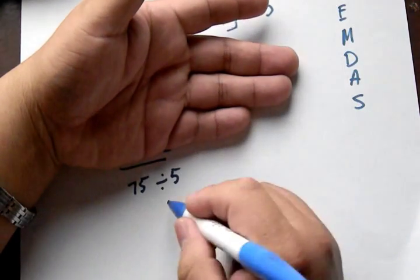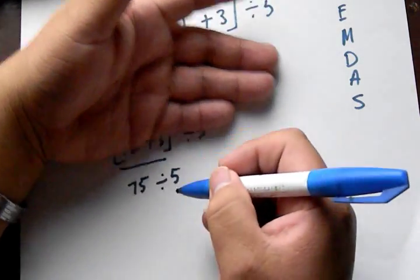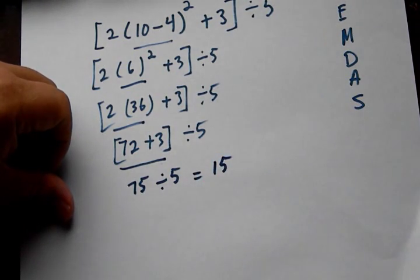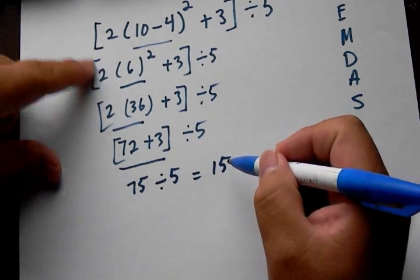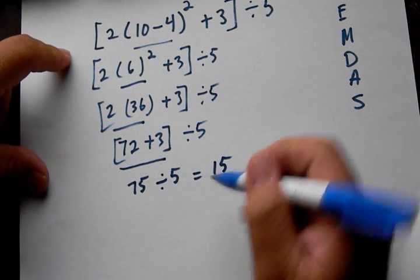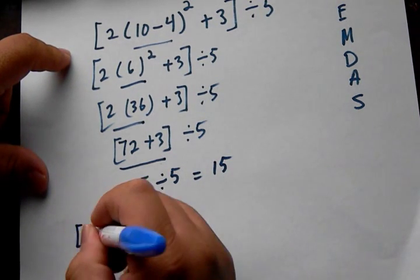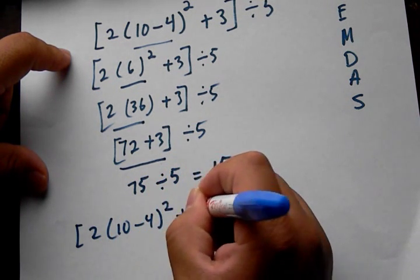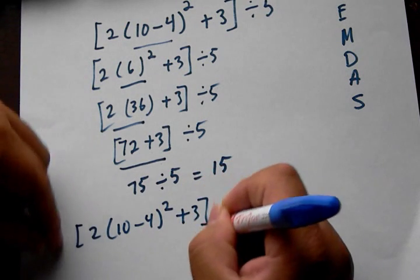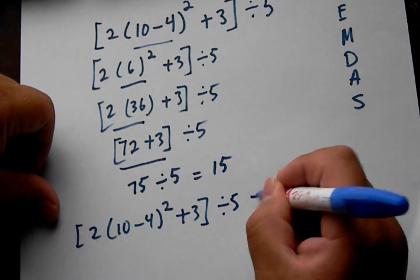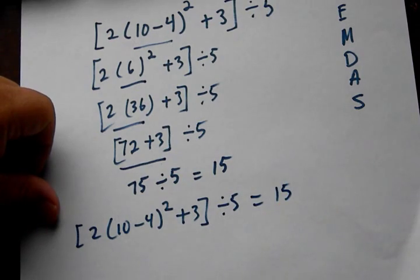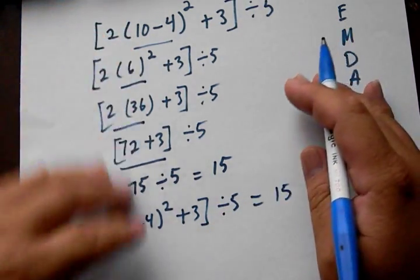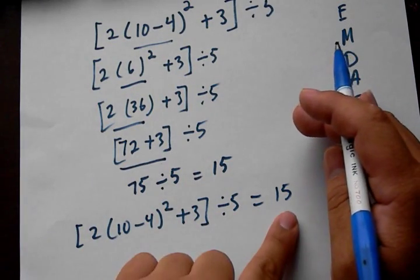And of course, 75 divided by 5 is 15. So basically what this is saying is that 2 times (10 minus 4) to the power of 2 plus 3, with the brackets, divided by 5 is equal to 15. So the value of this expression is 15.